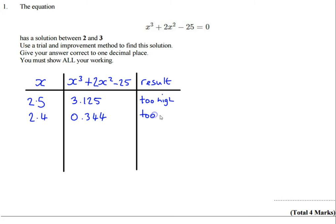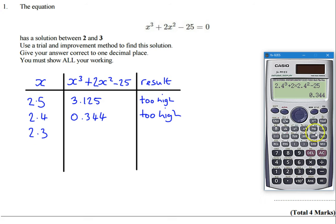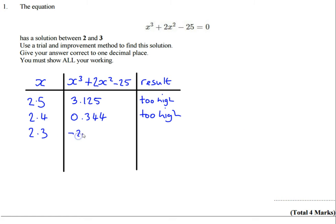So the next one I'm going to try is 2.3, so 2.3³ + 2 × 2.3² - 25, and that gives us -2.253, which we can see is too low.